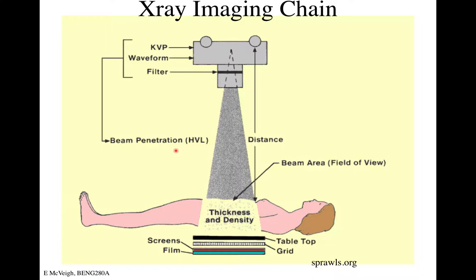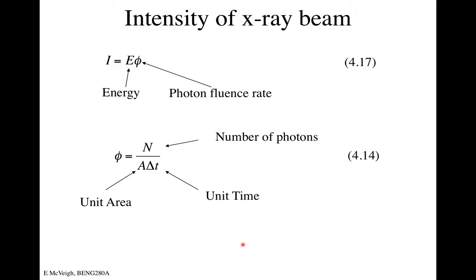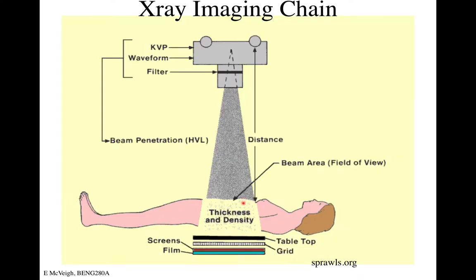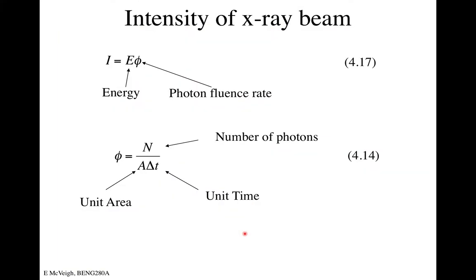The X-ray imaging chain: we have our X-ray light bulb, then a filter — usually copper or aluminum — to remove low-energy photons from the beam so they don't just hit the patient without getting through. We collimate this beam to illuminate only the area of the patient we want to image, and then there's a detector on the backside to detect the shadow. I'd recommend reading chapter 4 for the details and an alternative explanation.